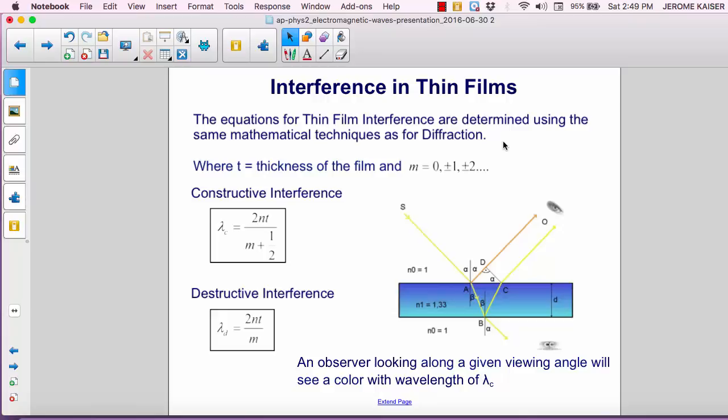So as we look at the thickness of the film, T, we find that we will get constructive interference for wavelengths lambda c given by 2nT divided by m plus a half, where n is the refractive index of the film, T is the thickness of the film, and m represents the number of wavelengths that it takes for the light to traverse the film.